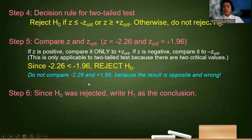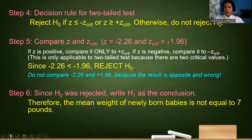Always remember that we should not compare a negative value to a positive critical value. So since H sub 0 was rejected, we write H sub 1 as the conclusion. So therefore, the mean weight of the newly born babies is not equal to 7 pounds. So meaning the claim was disputed.